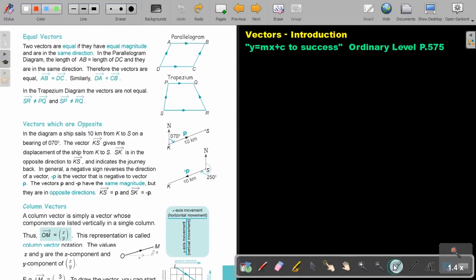What is equal vectors? Two vectors are equal if they have equal magnitude and are in the same direction. So if this is a parallelogram, I know that AB is equal to DC, because it's a parallelogram. The magnitudes are equal, and the directions are equal. So we can say that AB is equal to DC. So in the parallelogram diagram, the length of AB and the length of DC, and they are in the same direction. Therefore, the vectors are equal. AB equals DC. Similarly, DA equals CB.